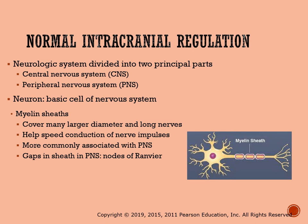The myelin sheath surrounds the larger diameter and longer nerve fibers throughout the PNS, and the gaps in the sheath are referred to as nodes of Ranvier. As electrical signals travel from the brain through the neurons to specific parts of the body, these impulses jump from one node of Ranvier to the next, helping speed the signals along very rapidly — like lightning speed.